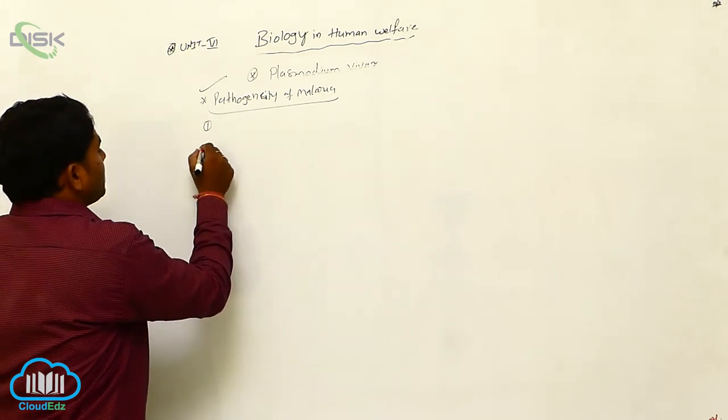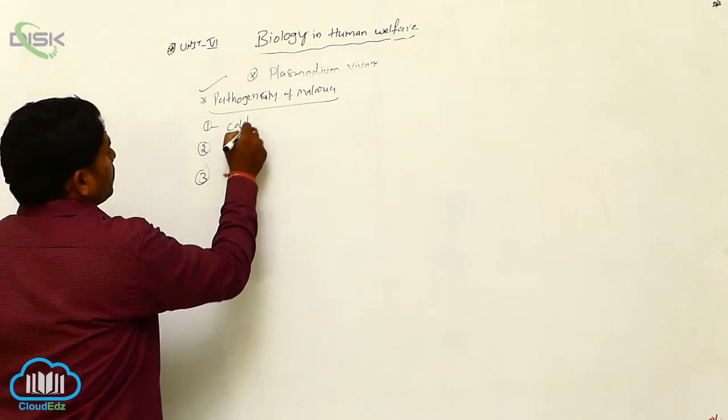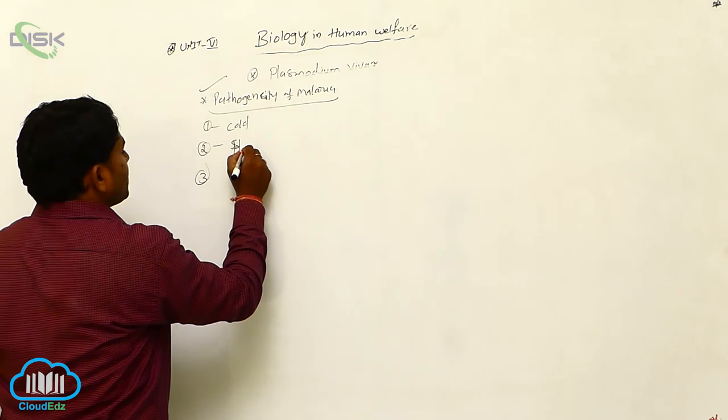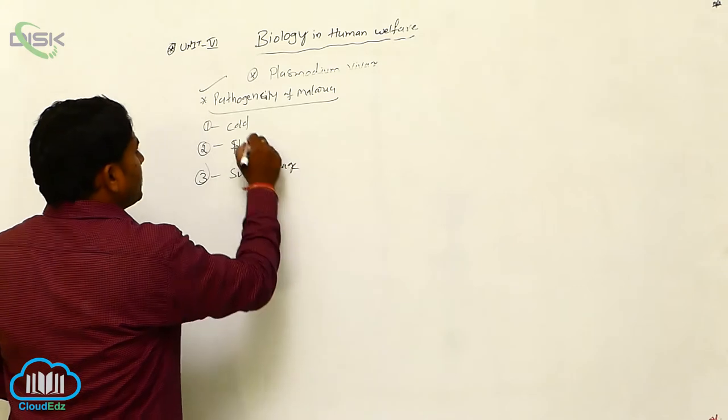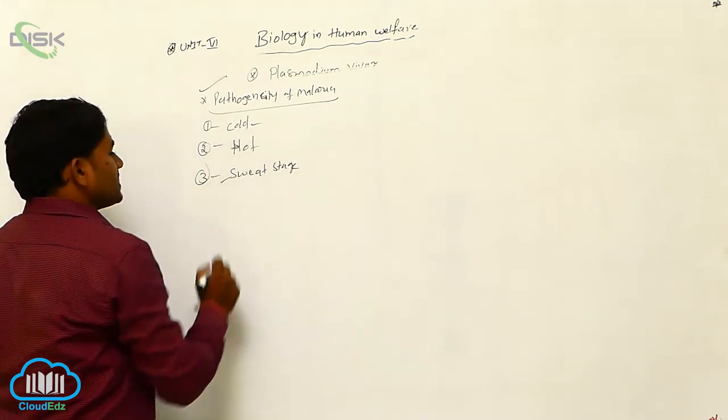There are three stages in the pathogenicity of malaria. One is cold stage, second one is heat stage or hot stage, third one is sweat stage.